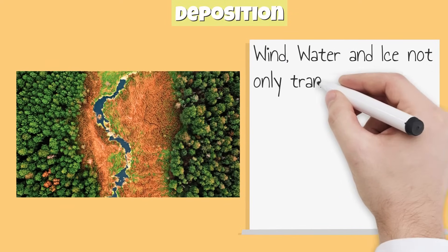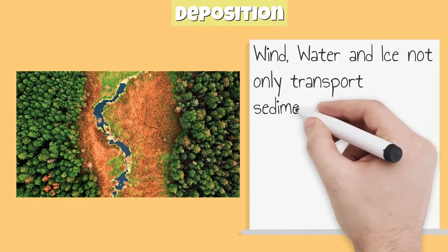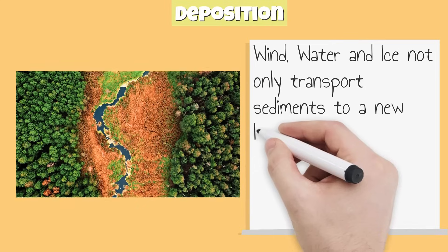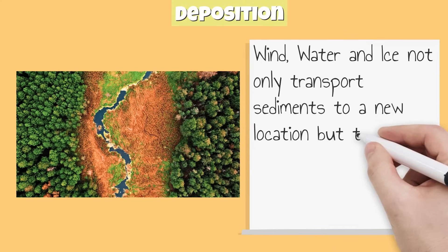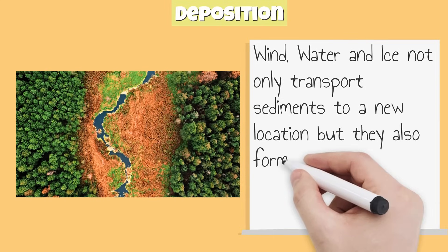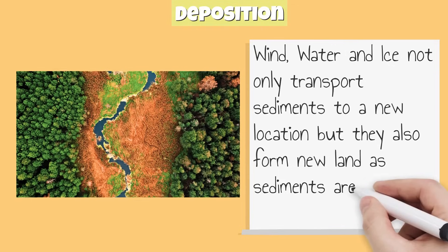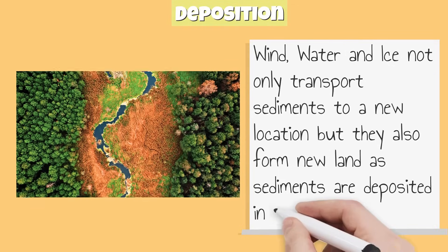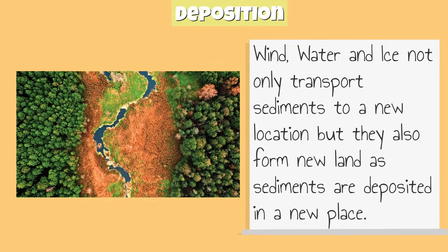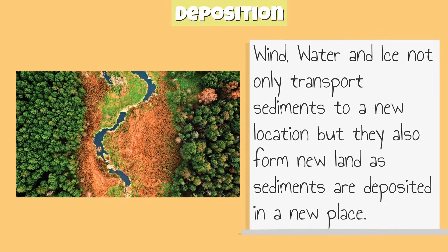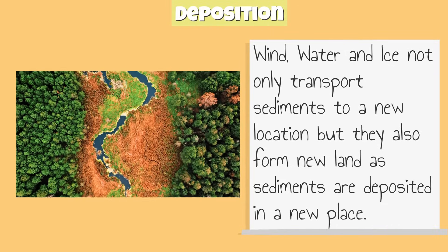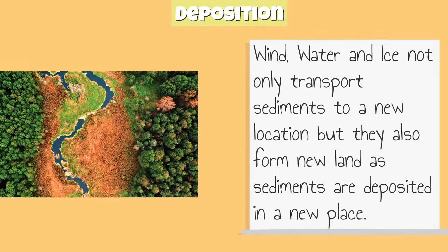Wind, water, and ice not only transport sediments to a new location, but they also form new land as sediments are deposited in a new place. This process is called deposition.